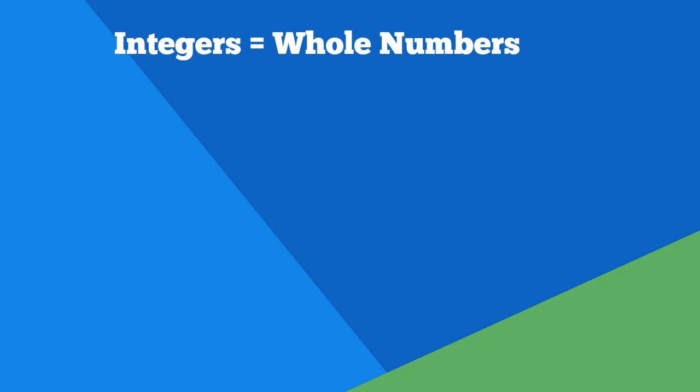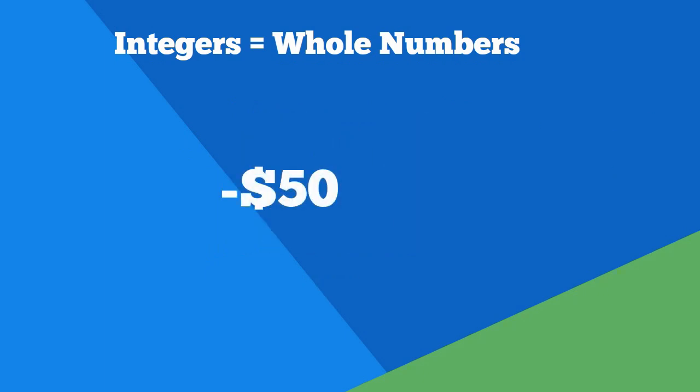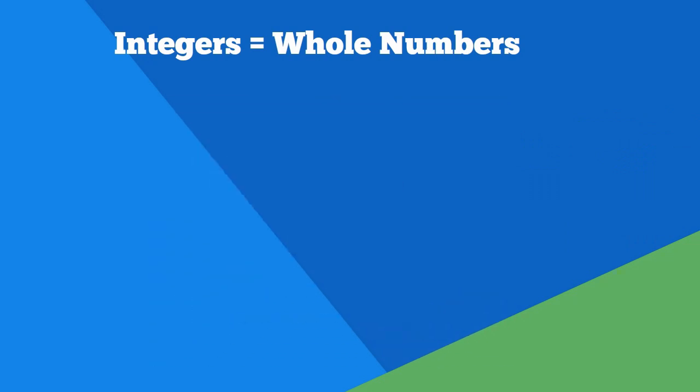Integers can describe opposite situations. For example, the positive integer would be a deposit of $50. The negative integer would be a withdrawal of $50. A positive integer would be 200 feet above sea level. The negative integer would be 200 feet below sea level.